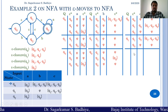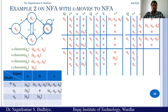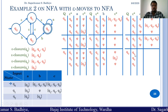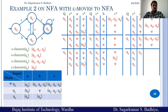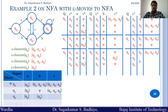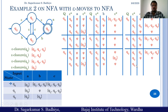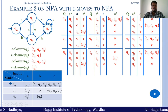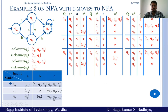Now we compute Q2 on C. Epsilon closure of Q2 is Q1, Q2, Q3. Transition from Q1 on C goes to Q2, and epsilon closure of Q2 is Q1, Q2, Q3. Q2 on C has no transition — phi. Q3 on C has no transition — phi. So we add a transition in the equivalent NFA: Q2 on C goes to Q1, Q2, Q3.